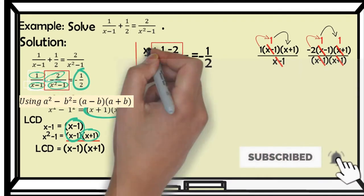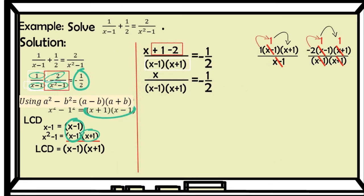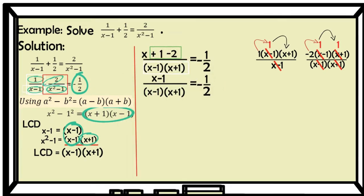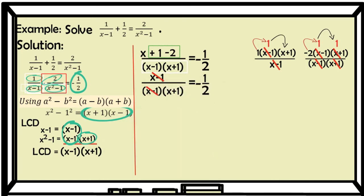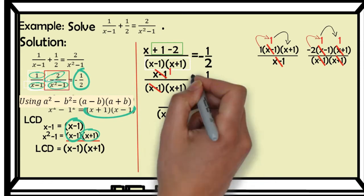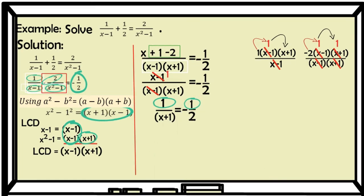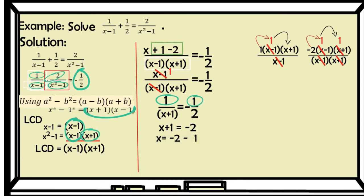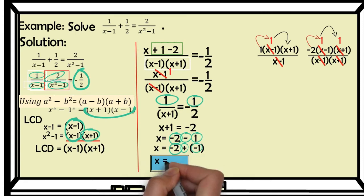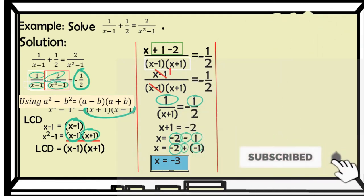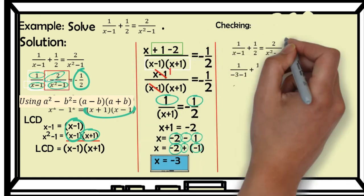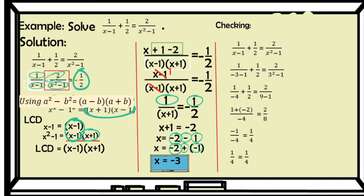Combine like terms: positive 1 and negative 2 — subtract to get negative 1. Then simplify: (x minus 1) over (x minus 1) equals 1, and negative 1 half remains. Since the numerators and denominators are equal (both 1), we get x plus 1 equals negative 2. Therefore x equals negative 2 minus 1. In subtraction, change the operation to addition and change the sign of the subtrahend: negative 2 plus negative 1 equals negative 3. Through checking by substitution, 1 fourth equals 1 fourth — it checks out.